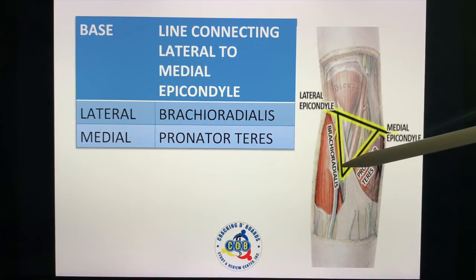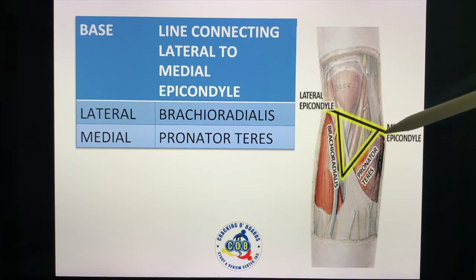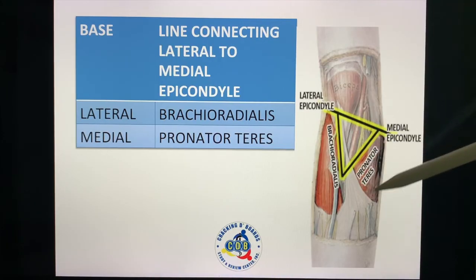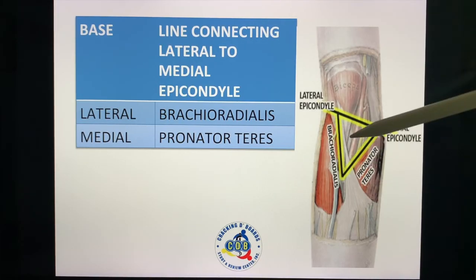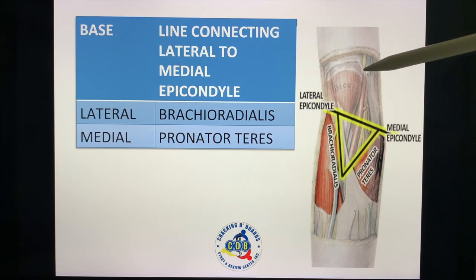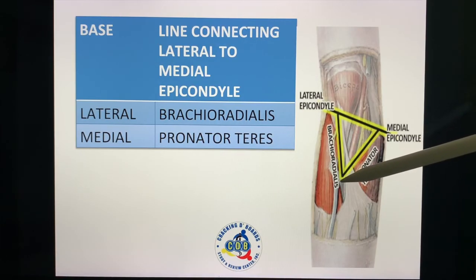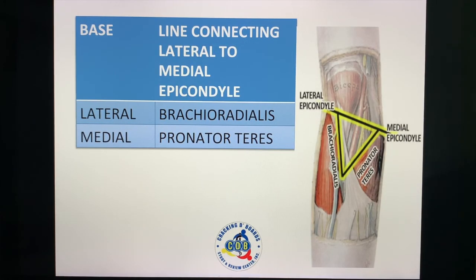Take note of the famous area where we extract blood from patients — the cubital fossa. The lateral epicondyle and medial epicondyle form the base via an imaginary line. On the medial side is the pronator teres, and on the lateral side is the brachioradialis — these are the borders of the cubital fossa. The brachial artery enters the cubital fossa, and once it exits, it becomes the radial artery, which passes through the anatomical snuff box, and the ulnar artery.